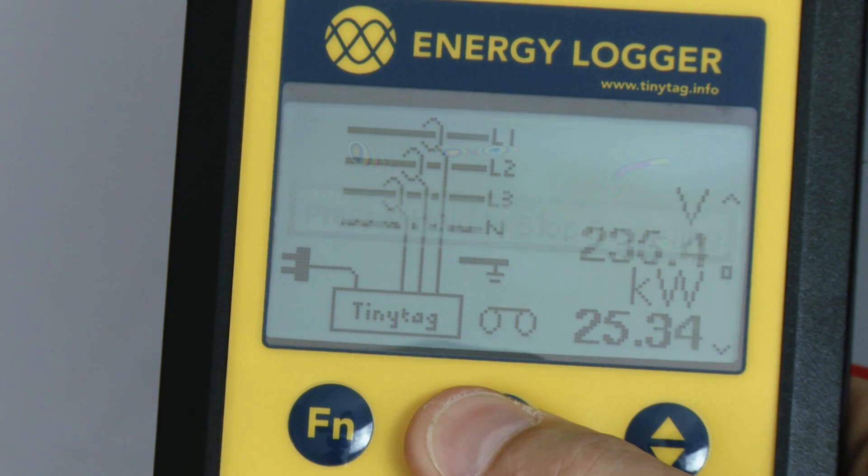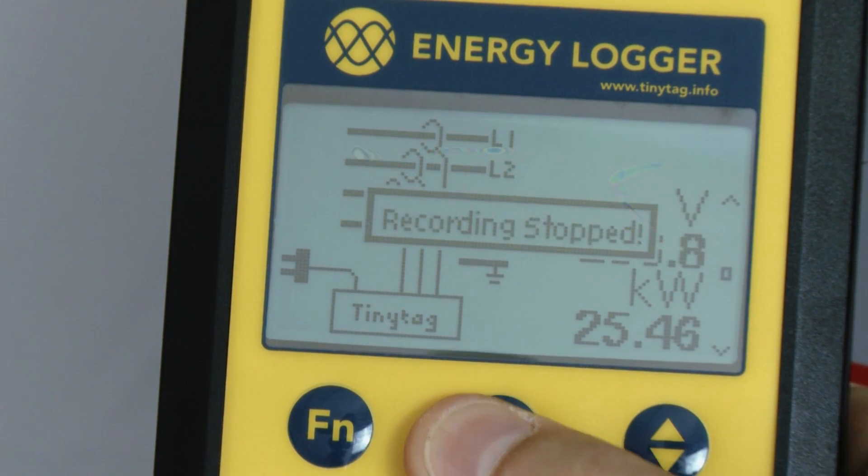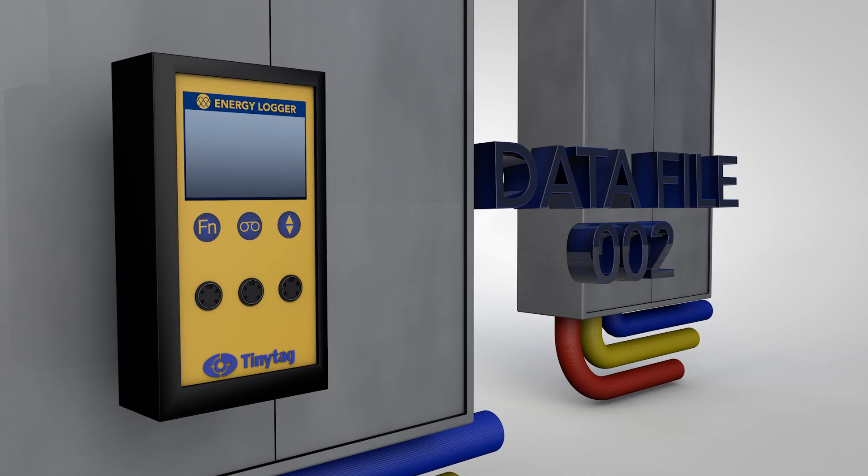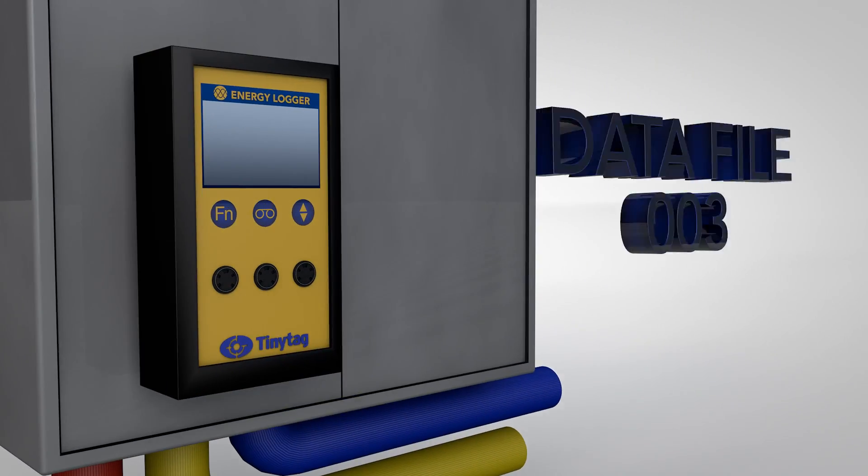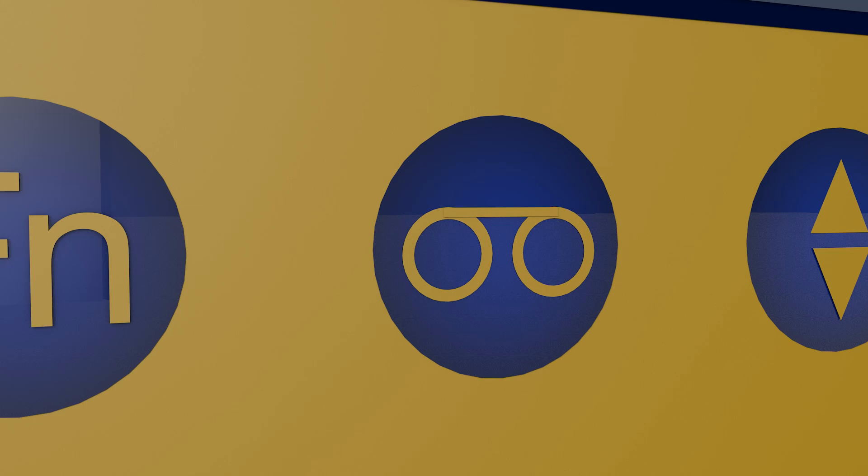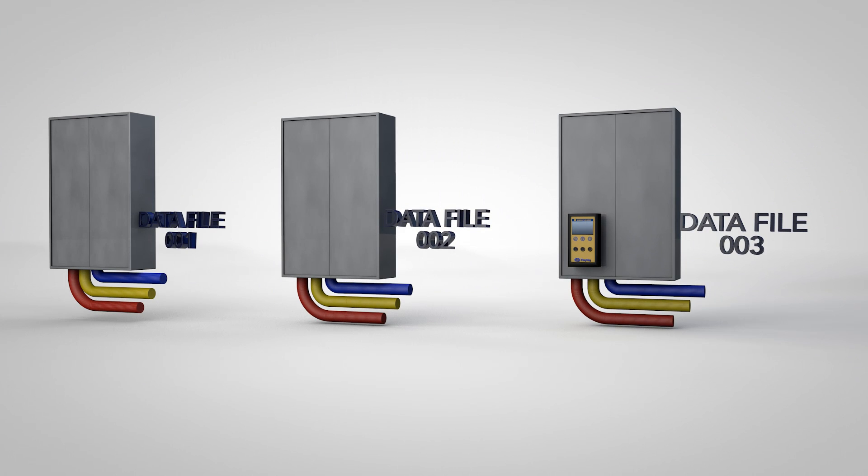To end recording, press the button again. The unit can be moved from one piece of equipment to another, recording individual data files for future downloading and analysis. Simply start recording again when the logger is set up on the next piece of equipment.